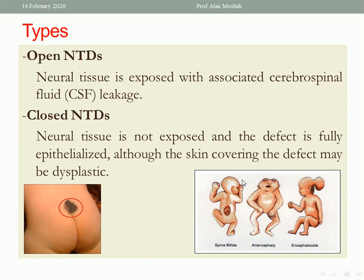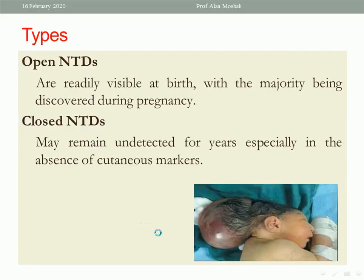For open neural tube defects, an example is anencephaly or meningocele. Open neural tube defects are readily visible at birth, with the majority being discovered during pregnancy. Closed neural tube defects may remain undetected for years, especially in the absence of cutaneous markers.